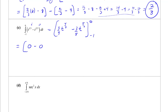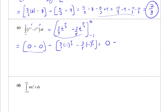Evaluated at 0, those terms are 0. At negative 1: 3/4 times (-1) to the 4/3 minus 3/5 times (-1) to the 5/3. The cube root of -1 is -1, to the 4th power is 1, so we get 3/4. For (-1) to the 5/3: cube root of -1 is -1, to the 5th is -1, so that's minus minus 3/5, giving plus 3/5.